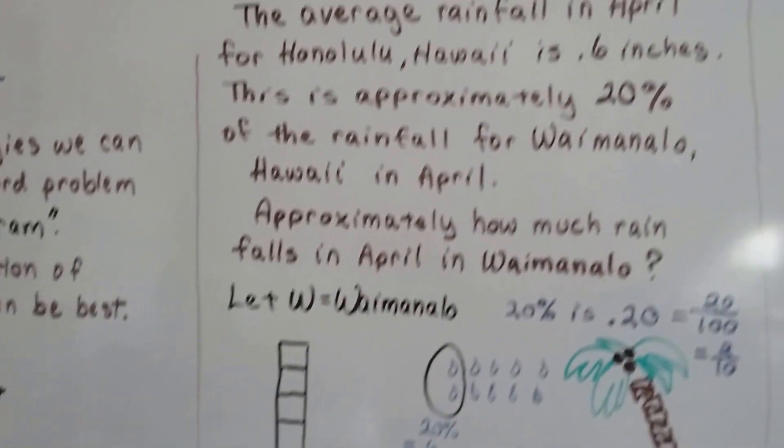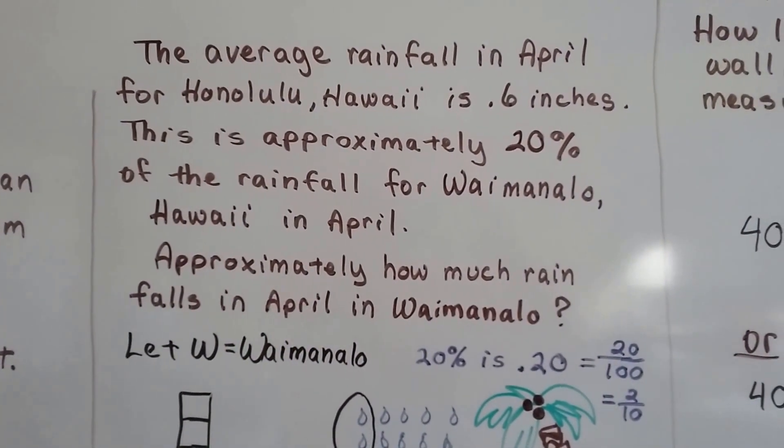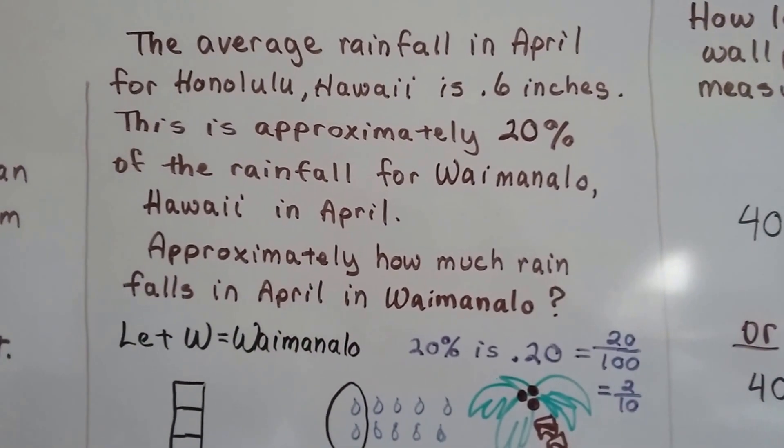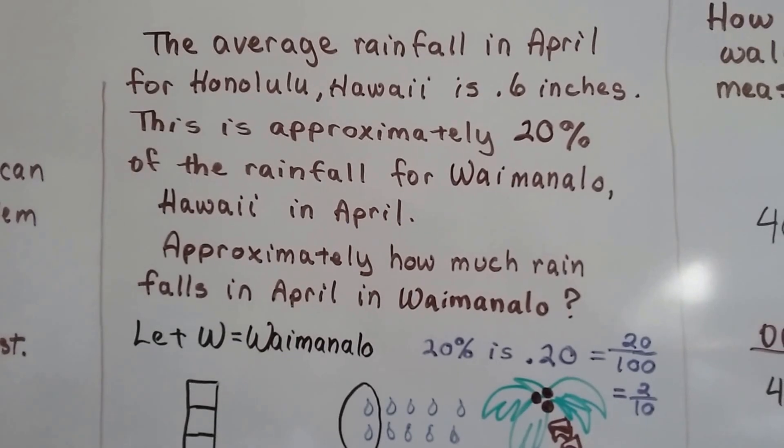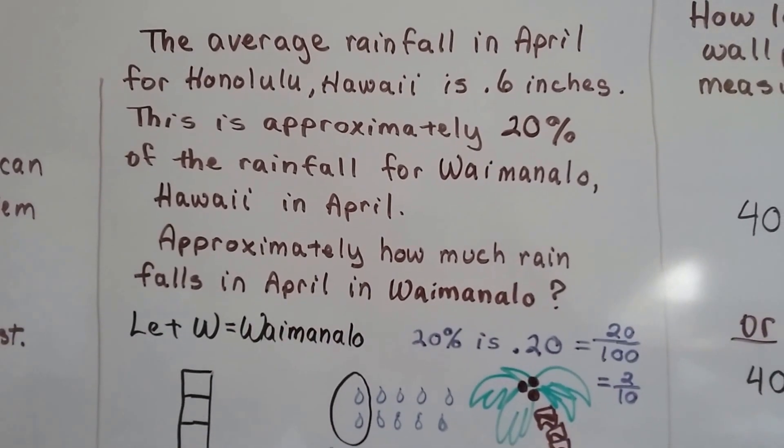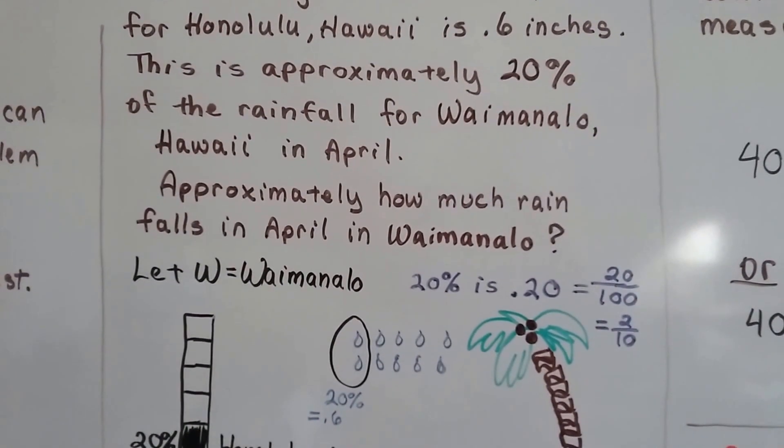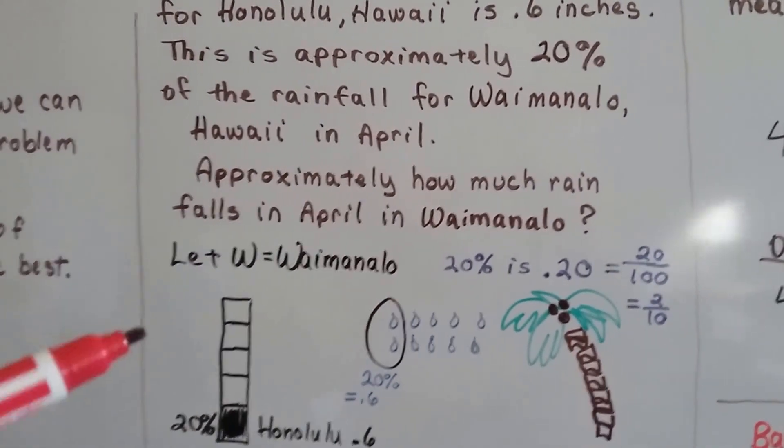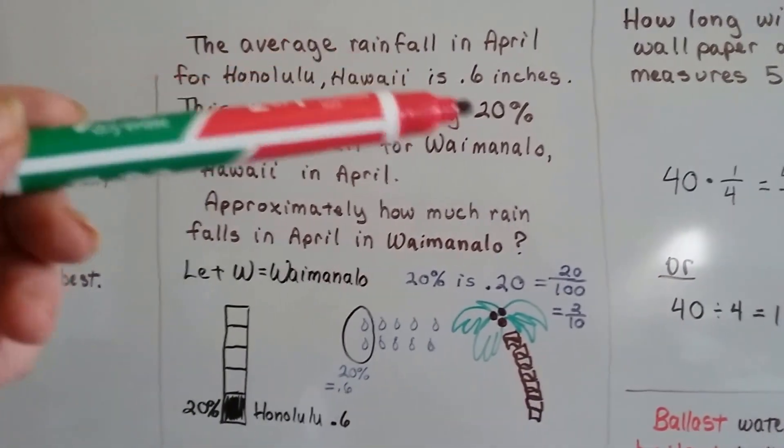So here's our first one. The average rainfall in April for Honolulu, Hawaii is 0.6 inches. This is approximately 20% of the rainfall for Waimanalo, Hawaii in April. So approximately how much rainfall is in April in Waimanalo? So we're going to let W equal Waimanalo. And we know that Honolulu is 0.6, which is 20%.